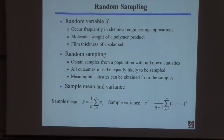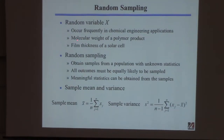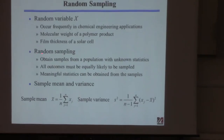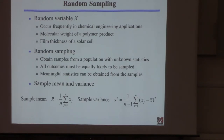Random variable X — we should be familiar with this now. Examples I often use are molecular weight of a polymer or thickness of a thin film. By random sampling, it means unbiased sampling — you take samples from the distribution and there's no bias to how those samples are done. They're done according to their probability, like flipping a coin or rolling a die. All outcomes are equally likely to be sampled according to the underlying distribution.